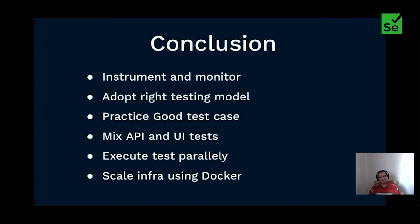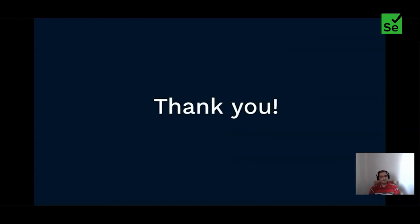To conclude: use the right metrics and monitor them to make sure you're on the right track. Use the right test strategy — whether the test pyramid or testing trophy — chosen after understanding your testing landscape. Make sure your test cases are atomic and practice good test case characteristics. Start using APIs in UI functional tests to help with faster execution and reduced flakiness. Execute your tests accordingly and move your test setup to Docker. Thank you all for attending the session — I hope you learned something new today.